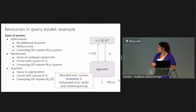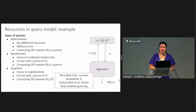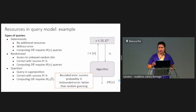The last thing we're going to talk about in this model is bounded versus unbounded error regime. In the bounded error regime, the success probability is supposed to be two-thirds. In the unbounded error regime, we want the algorithm to output the correct value with success probability that is better than random guessing — so if it's just a boolean function, probability better than one-half.